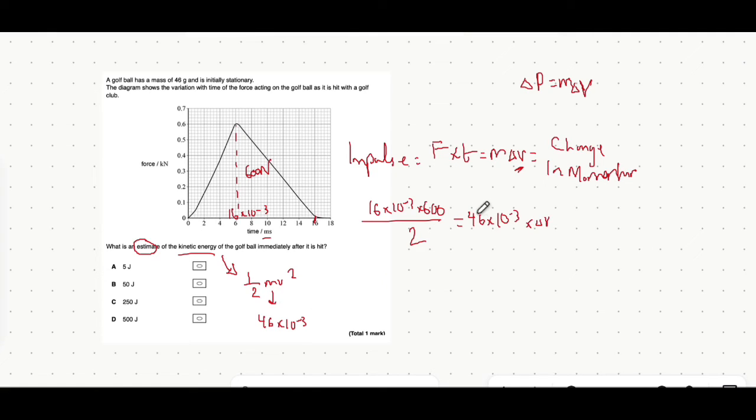What we can do from here is divide both sides by this 46 times 10 to the minus 3. So we have 46 times 10 to the minus 3 in the denominator on the left hand side. And that will give you the change in velocity.